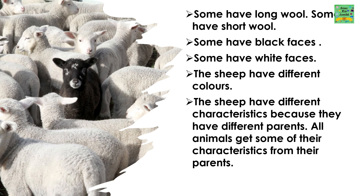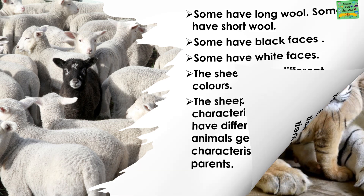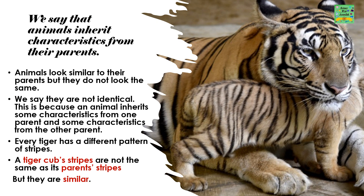All animals get some of their characteristics from their parents. We say that animals inherit characteristics from their parents. Animals look similar to their parents but they do not look the same — we say they are not identical. This is because an animal inherits some characteristics from one parent and some characteristics from the other parent.